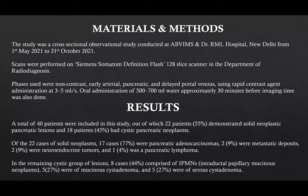A total of 40 patients were included, out of which 55% demonstrated solid pancreatic lesions and 45% had cystic pancreatic neoplasms. Out of the solid neoplasms, 77% were pancreatic adenocarcinomas, 9% were metastatic deposits, 9% were neuroendocrine tumors, and one case was pancreatic lymphoma. In the remaining cystic group of lesions, 44% comprised of IPMNs, 27% comprised of mucinous cyst adenomas, and another 27% were serous cyst adenomas.